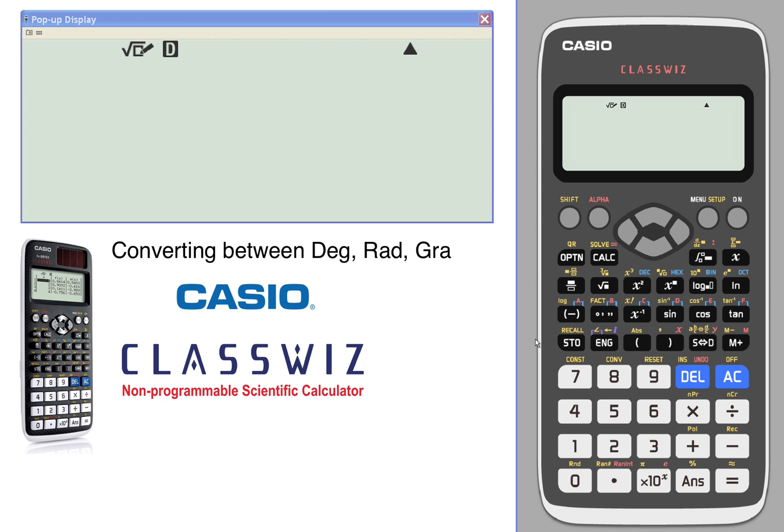Converting between degrees, radians, and gradients. Let's start out with a radian measure. We're currently in degrees, that's what the D means. So we'll start out with pi over 2.